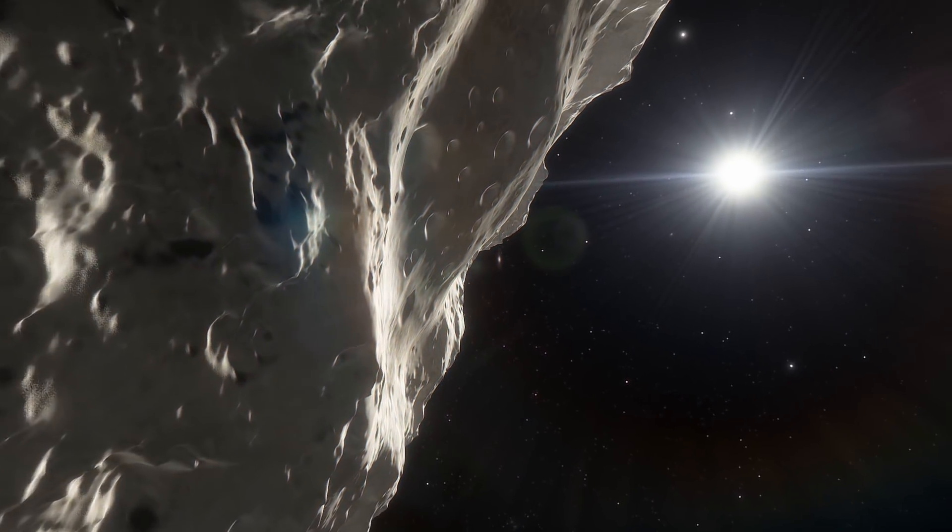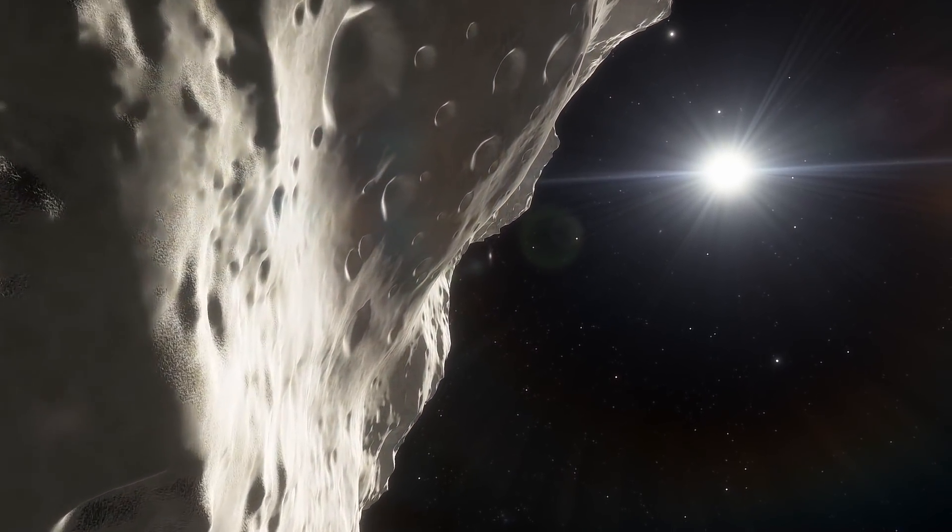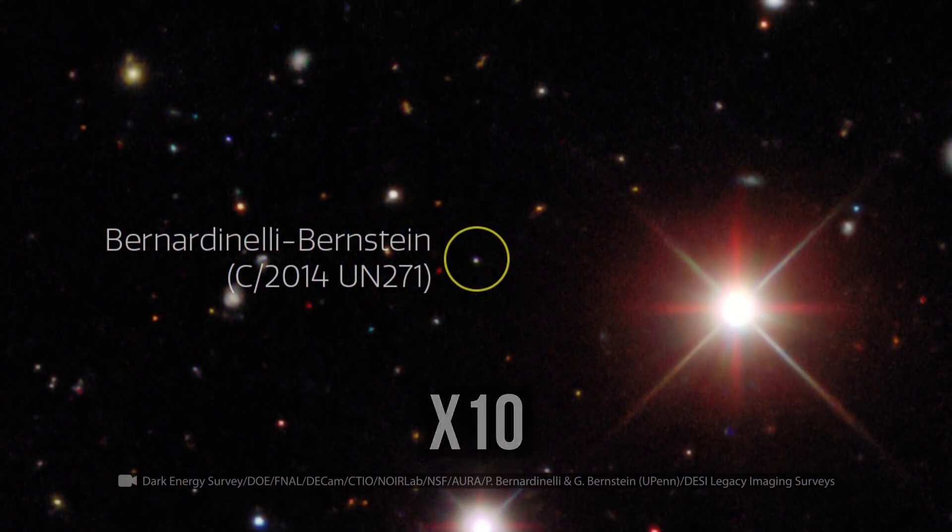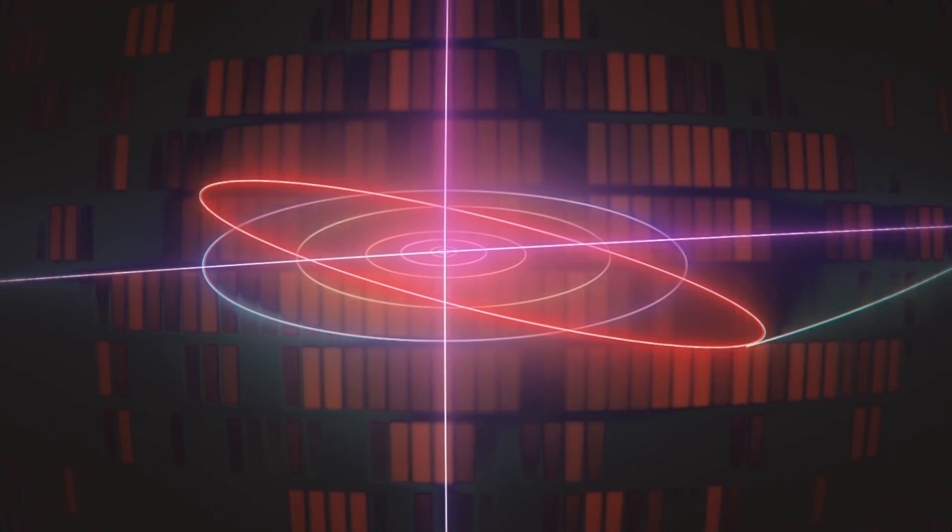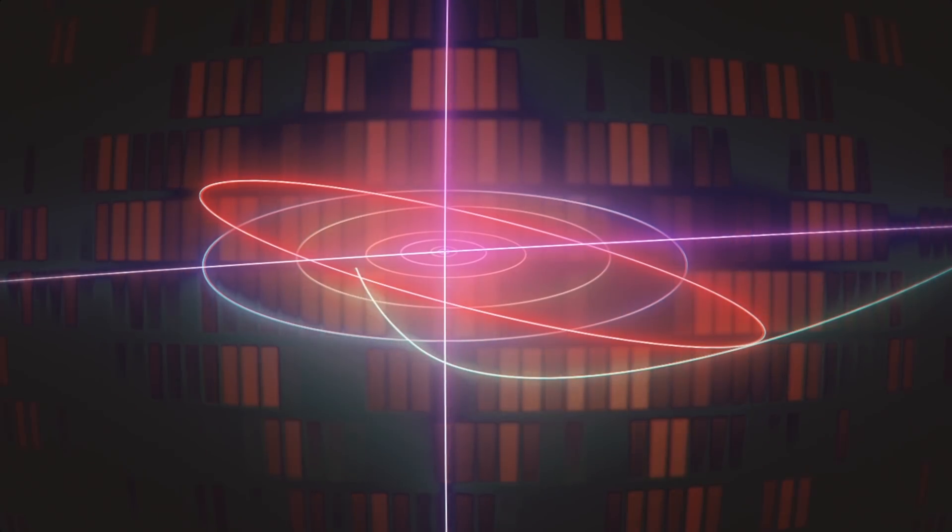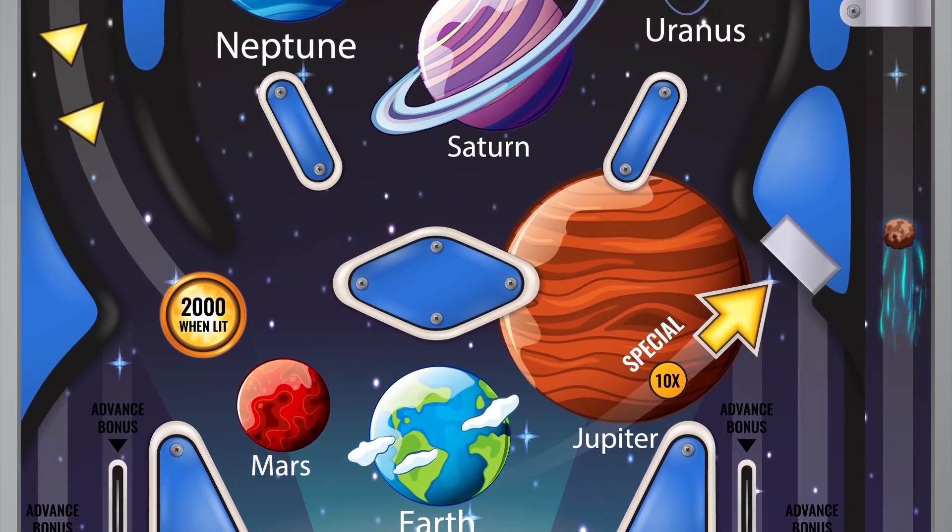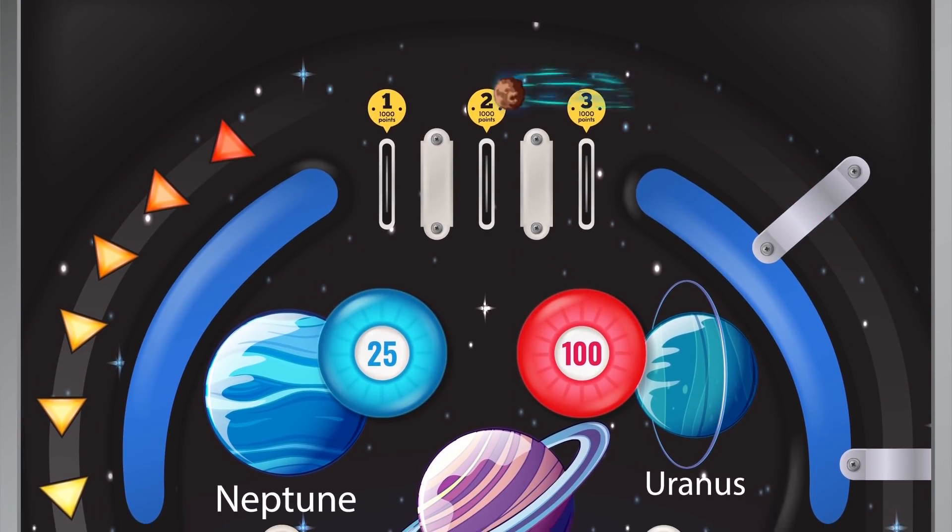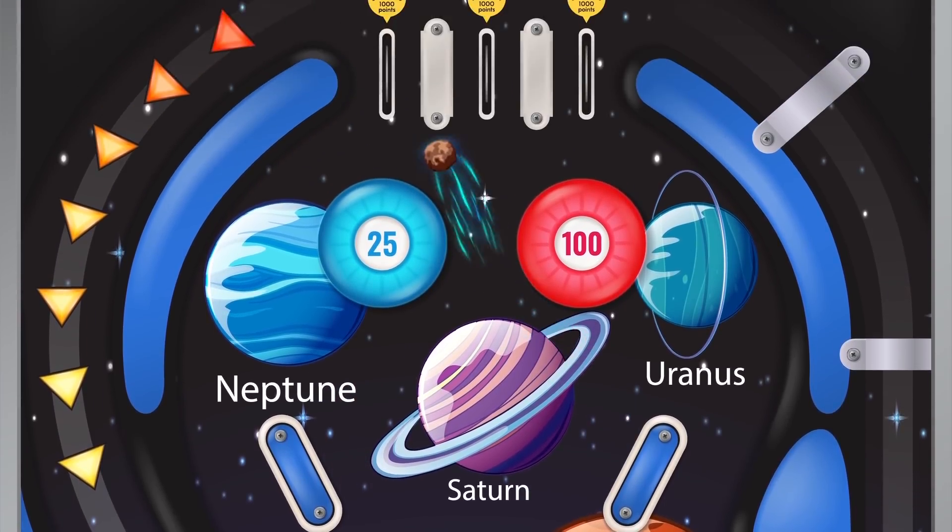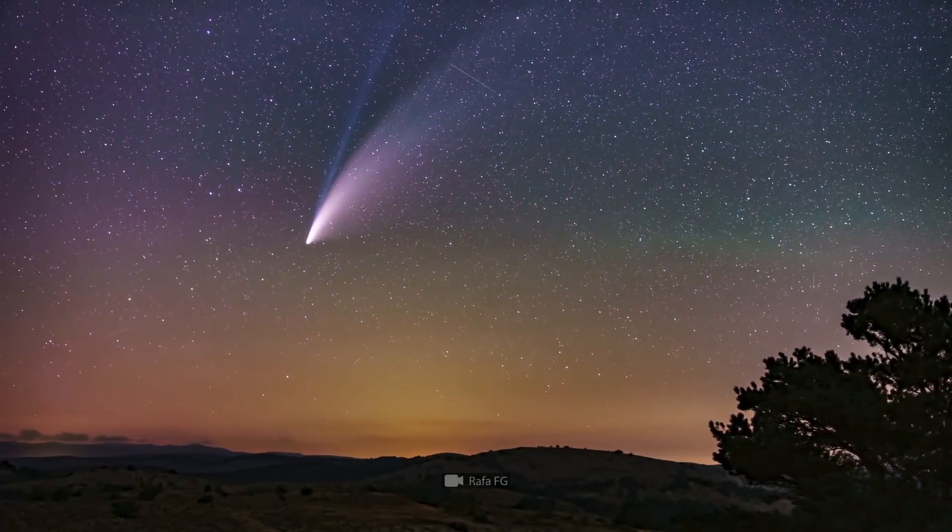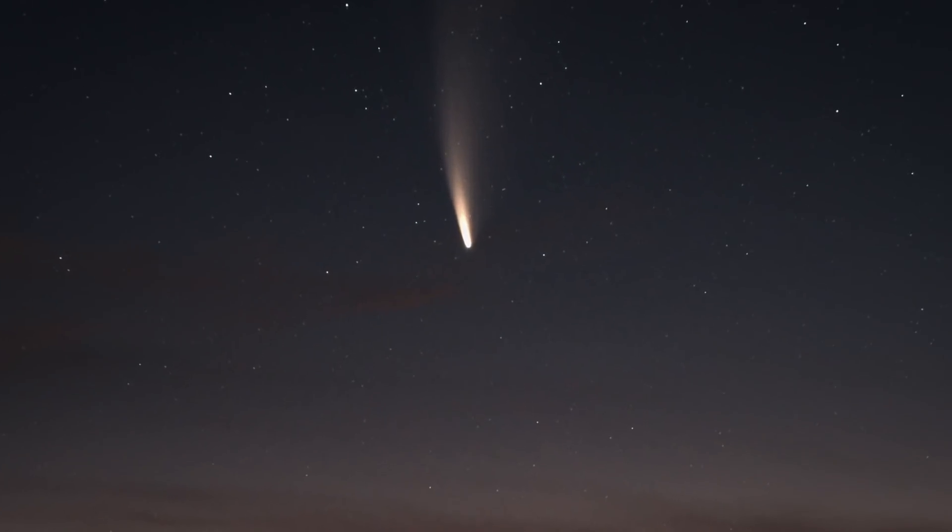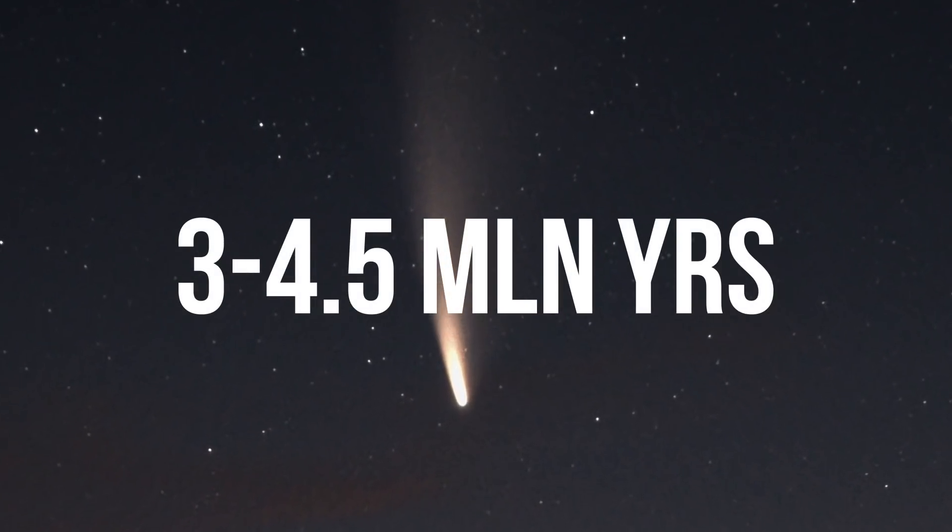Comet Bernardinelli-Bernstein is heading towards us from the Oort cloud, but it's 10 times the size of the comets we're used to. It's traveling perpendicular to the solar system's protoplanetary disk. The comet will presumably fly into Saturn's gravitational field and then loop back again. The next time it'll be seen in our neighborhood again will be in 3 to 4 and a half million years.